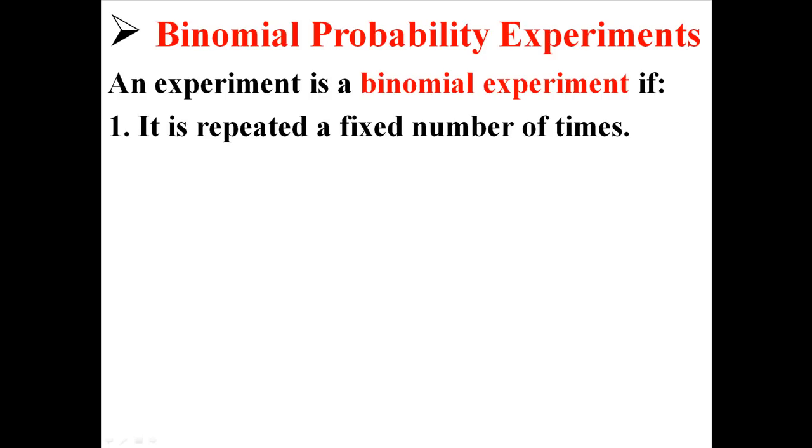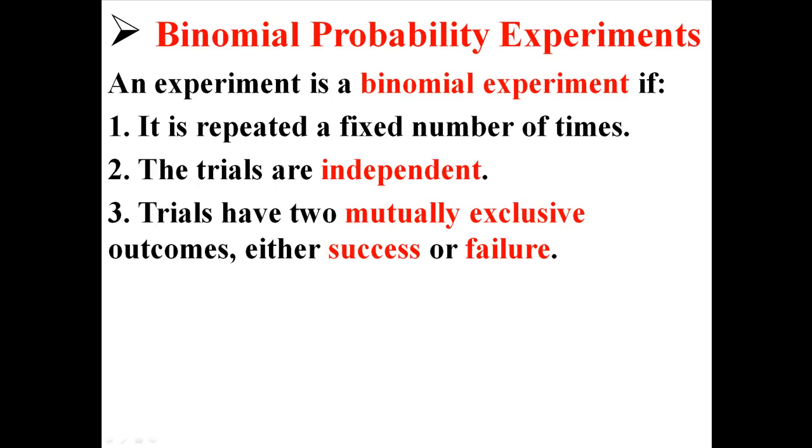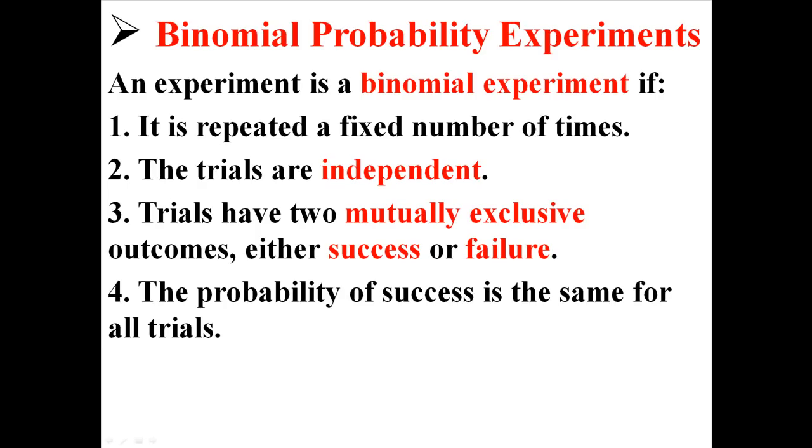First, something is a binomial experiment if it is repeated a fixed number of times, if the trials are independent, if the trials have two mutually exclusive outcomes, either success or failure, and if the probability of success is the same for all trials. If you meet all four of those conditions, you have a binomial probability experiment.